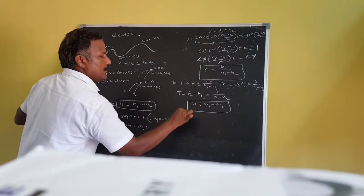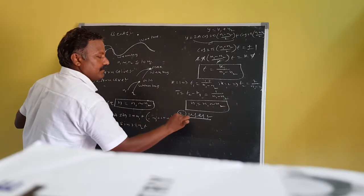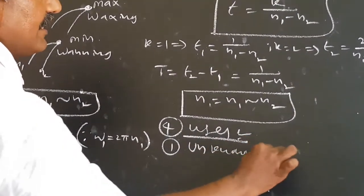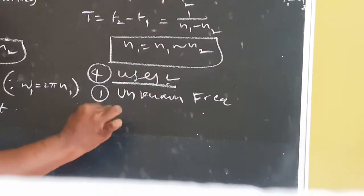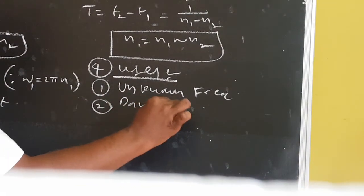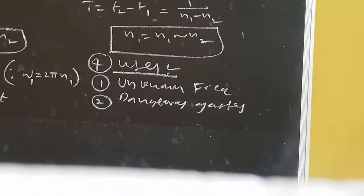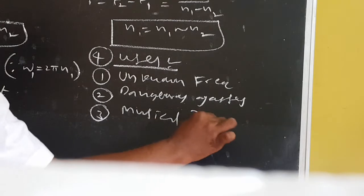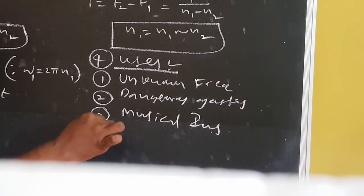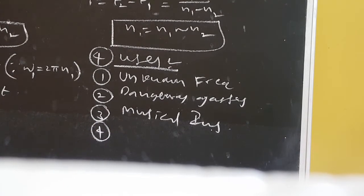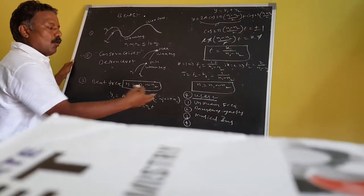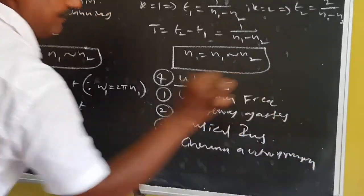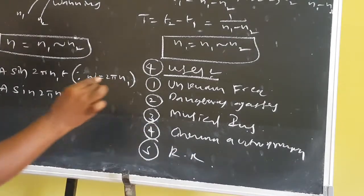Now the uses of beats. First, beats can be used to find the unknown frequency of a tuning fork. Second, to detect dangerous gases in mines. Third, they are used in musical instruments to produce separate sound notes. Fourth, they are used for special effects in cinematography. Fifth, they are used in radio receivers.